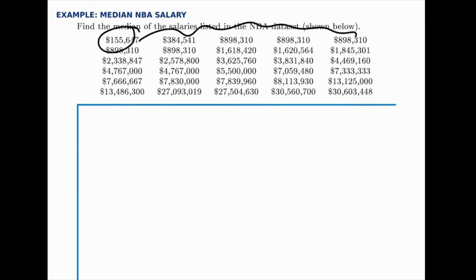It's important when finding the median to order the values from least to greatest or greatest to least, so that when we look in the middle of the list, the middle value is truly in the middle — half of the data points fall below it and half fall above it.